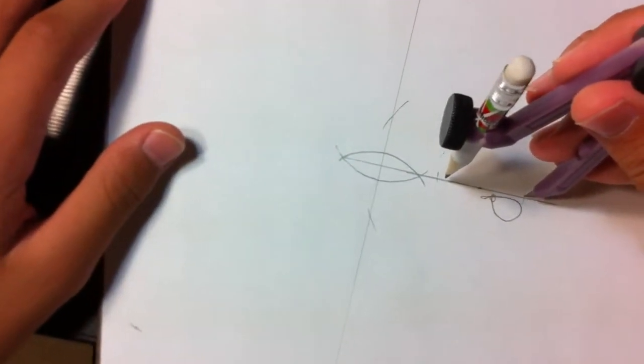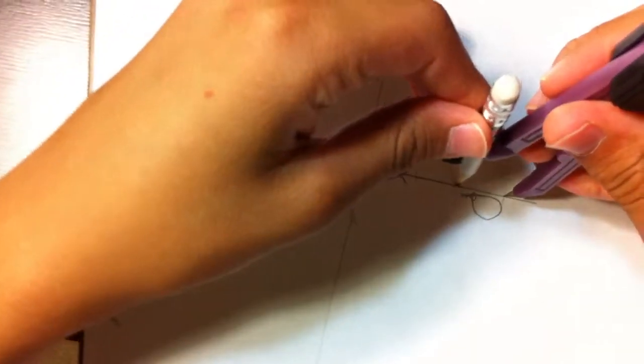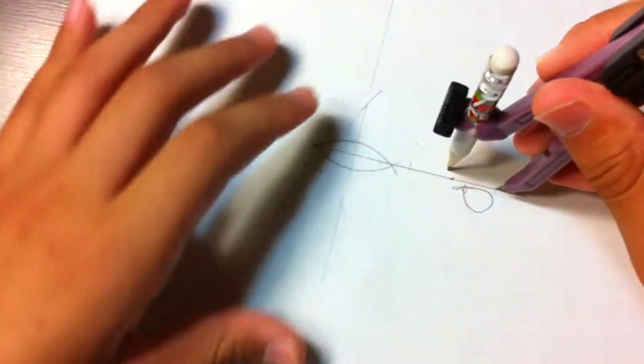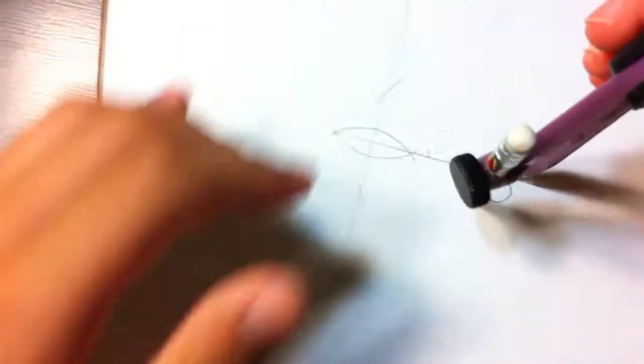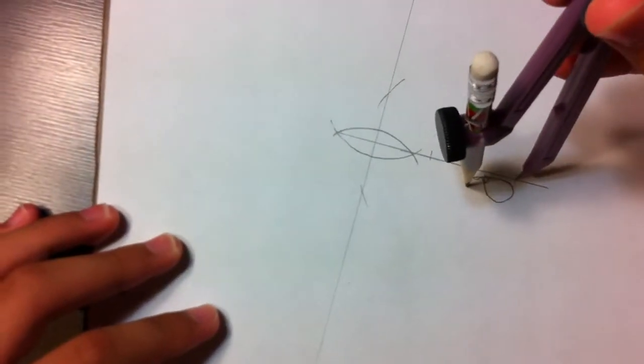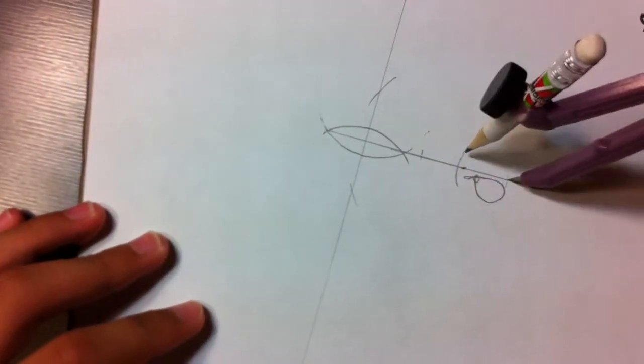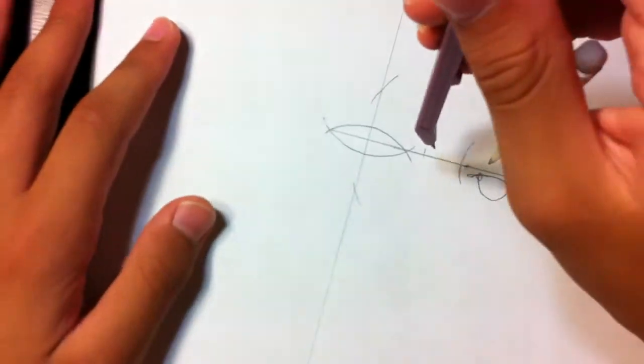Then you draw the perpendicular bisector of the new segment that you just created. And since you already have the midpoint, it's easy to choose a compass setting for that, that is closer to half, so you don't have to draw as much.